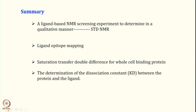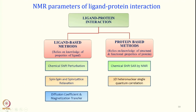Now let us go into a little more detail. Today we will be discussing how you can look at the protein side — the other partner, which is a bigger molecule. Last time we summarized ligand-based NMR methods for screening experiments to determine in a qualitative manner, STD NMR. We can do ligand epitope mapping, and using the STD amplification factor we can find out the dissociation constant in a quantitative manner. We also discussed saturation transfer double difference for whole cell binding. Today we are going to look at the other side: protein-based methods.